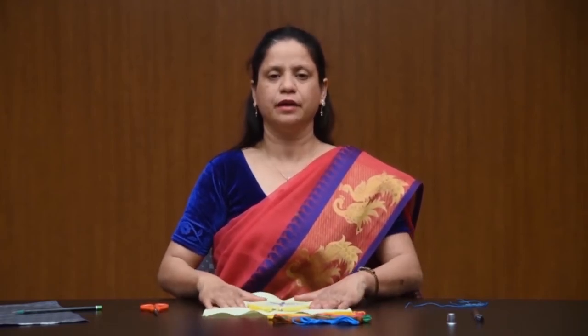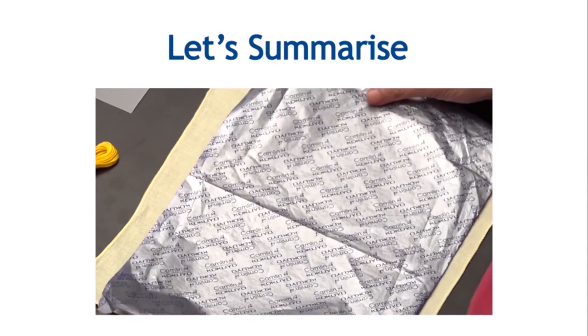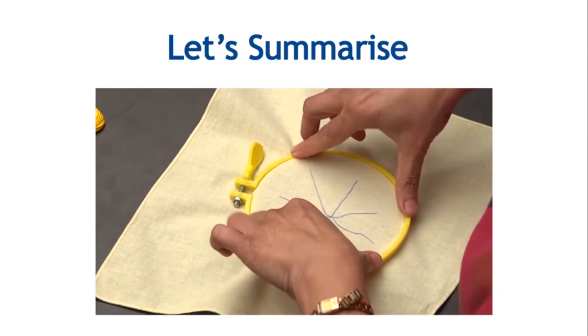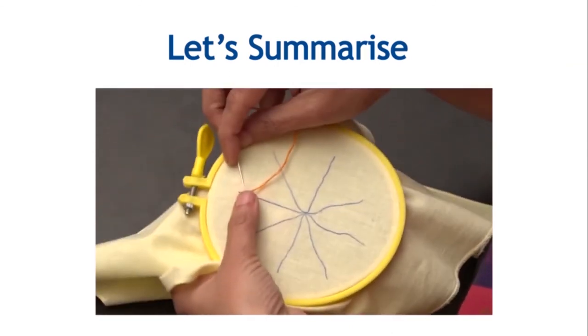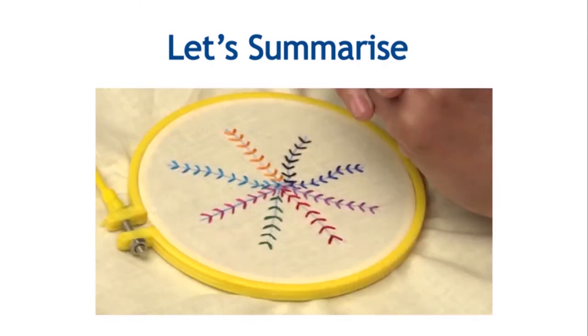Now your design or motif is ready. Let's summarize the embroidery steps: place the fabric on a neat and clean surface and trace the outline of the design, fix the fabric on the embroidery frame, start the embroidery work, and after completion finish the embroidery work. Thank you viewers — learn by doing and give your best. In the next video we will learn feather stitch.